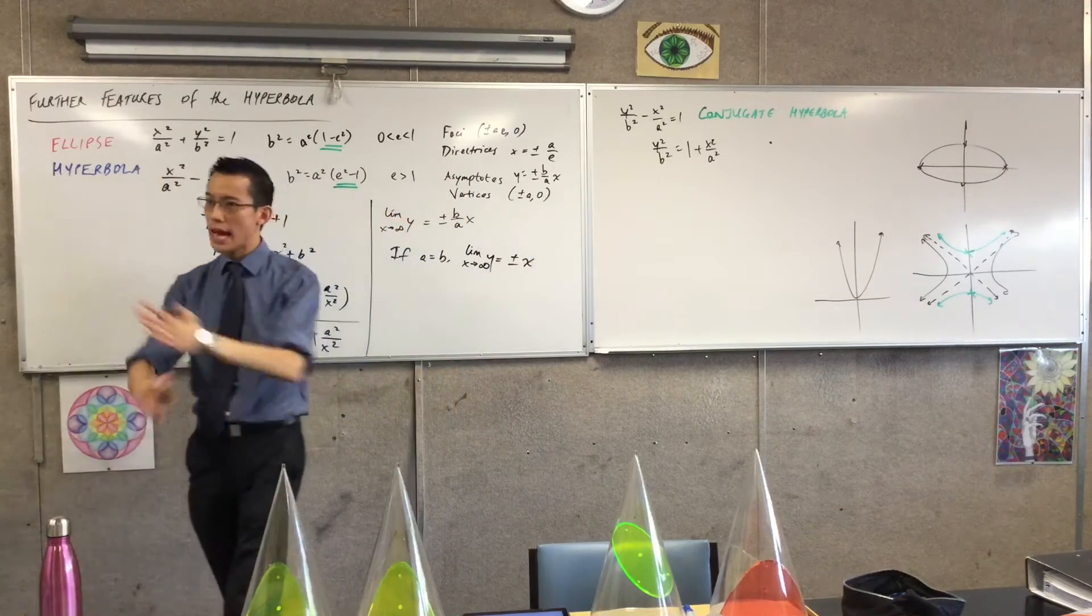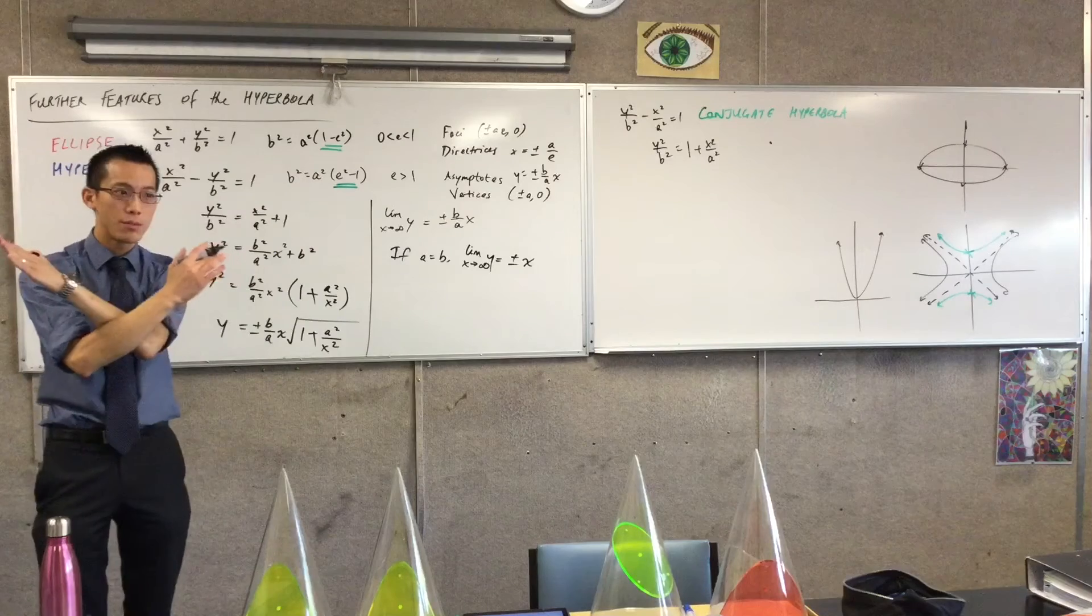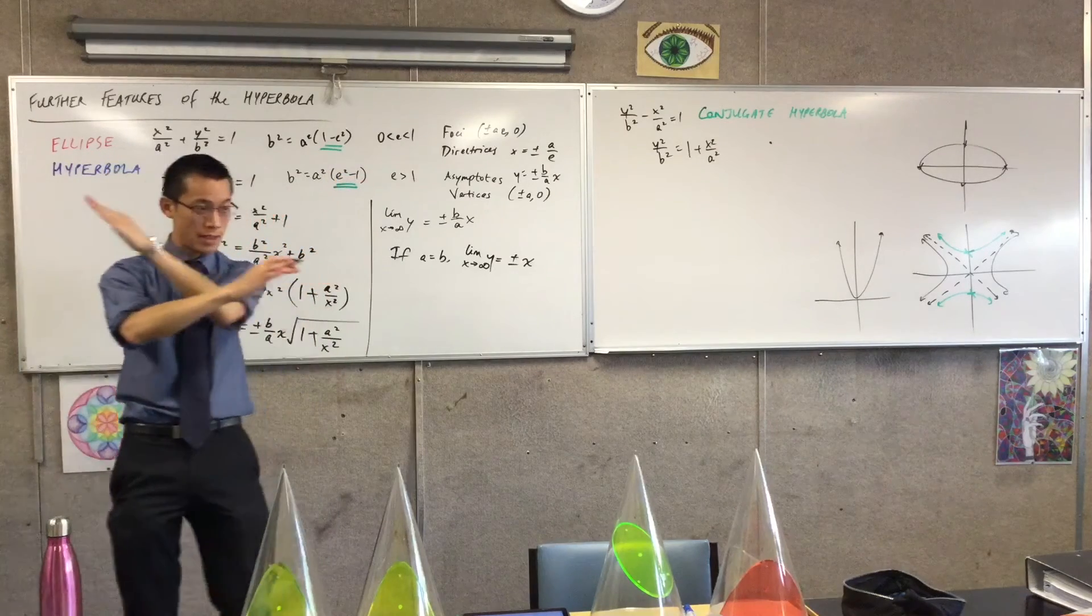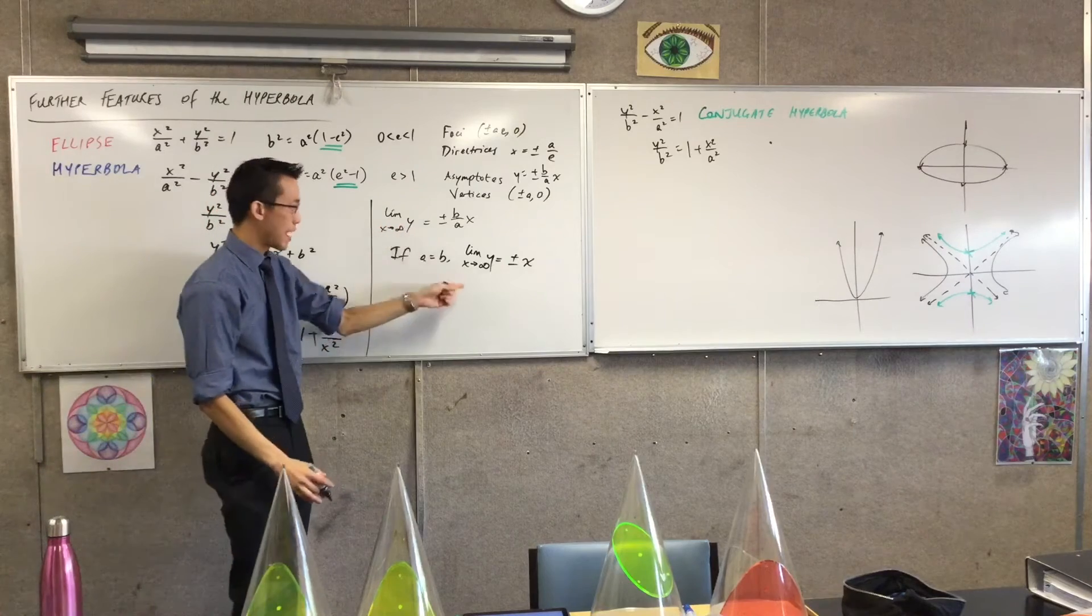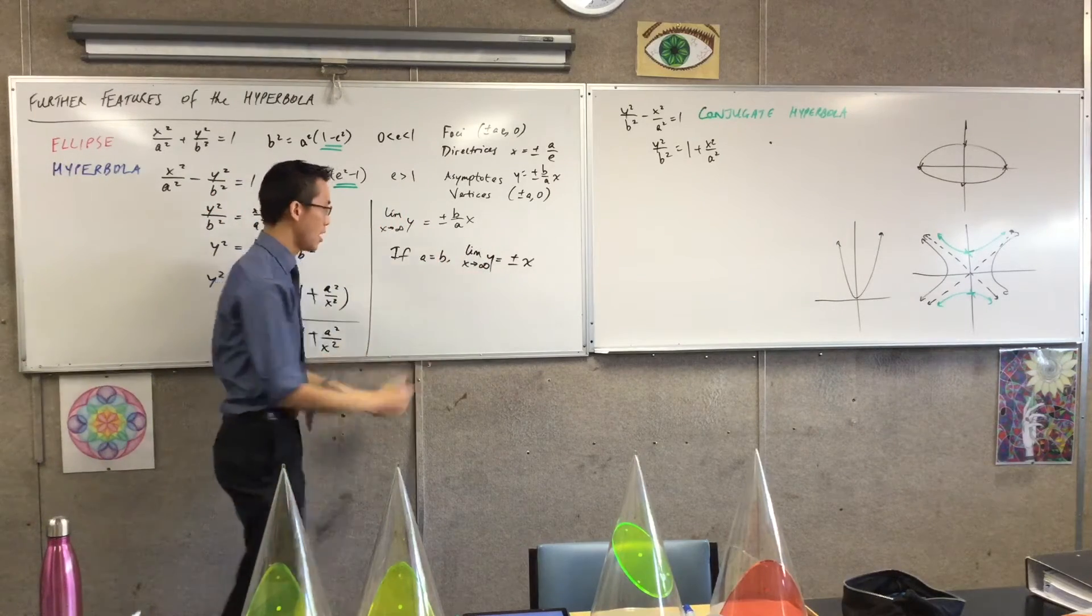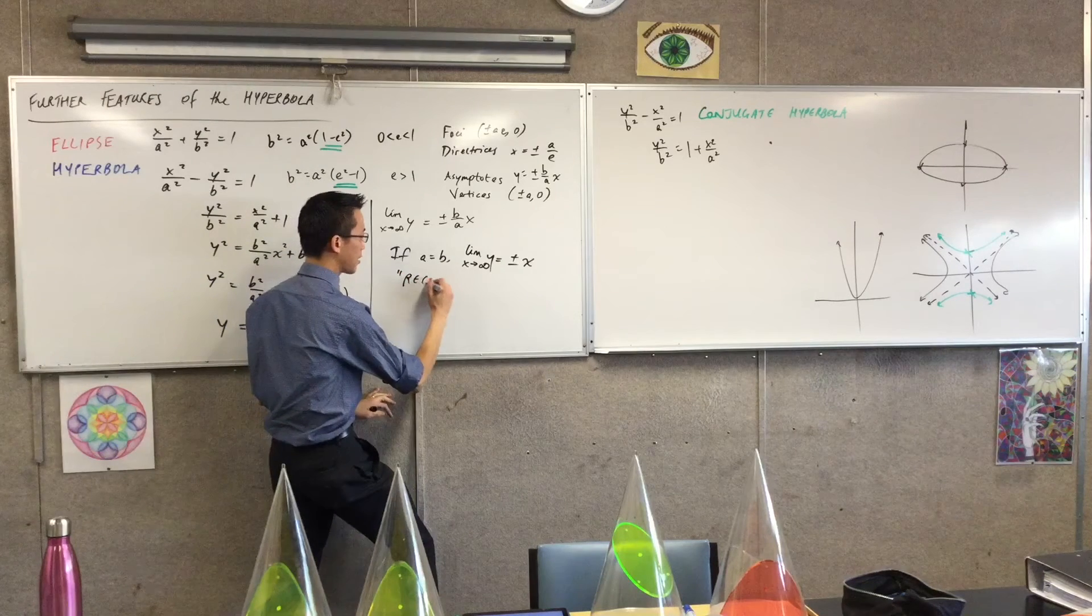So these two asymptotes here are going to be at right angles. Do you see that? Like one's plus x and one's minus x. Now, being that they are at right angles, the hyperbola, the specific kind of hyperbola you get from this, we call it the rectangular hyperbola. And you might say, what? Where are the rectangles in there?